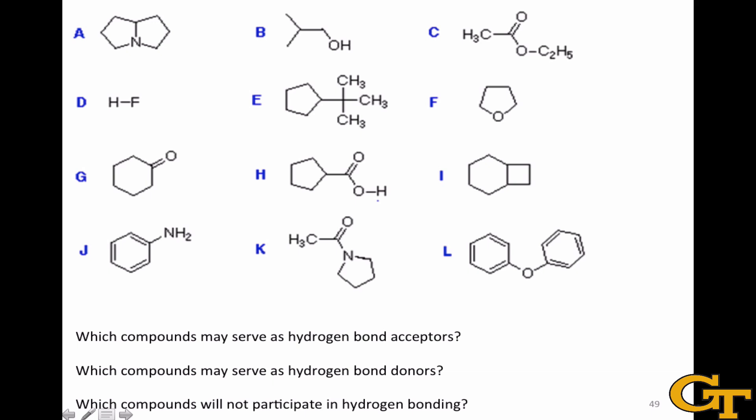The nomenclature of hydrogen bonding can be a little bit confusing, so let's work through this problem to bring a little more clarity to the situation. Let's start by defining hydrogen bond donors and acceptors.